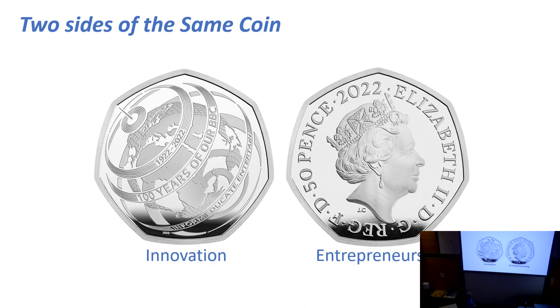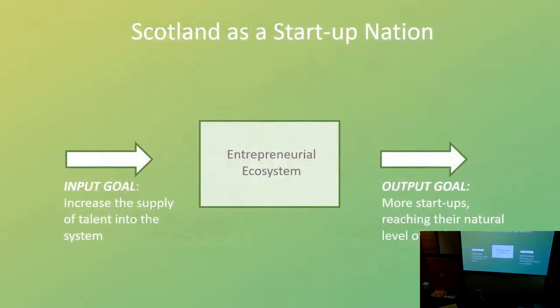Putting that into the context of the wider approach we need to take in the country, the next thing we have to do is think about the entrepreneurial ecosystem as a system. Historically, we've made lots of isolated interventions - one agency's done that, the government's done this, a private body's done that. But we need to coalesce around the same model of how the innovation entrepreneurial ecosystem works if we're going to reinforce mutually each other's interventions.